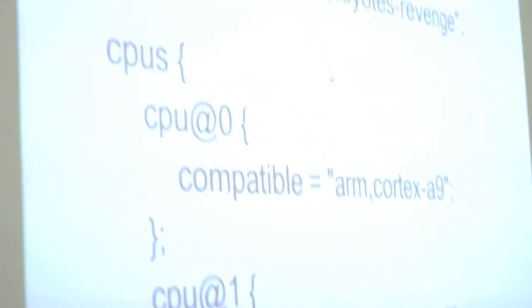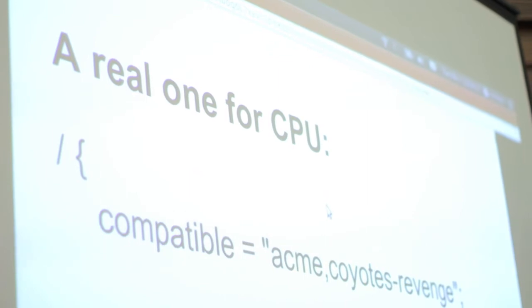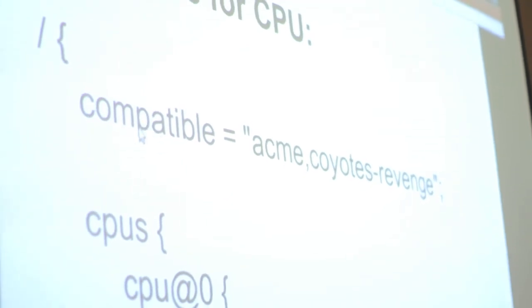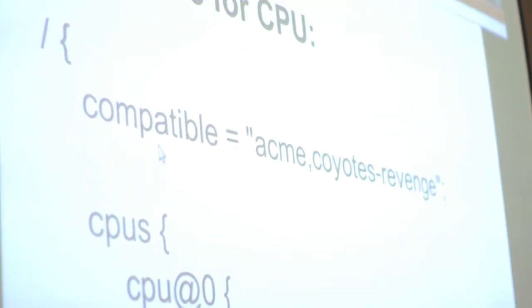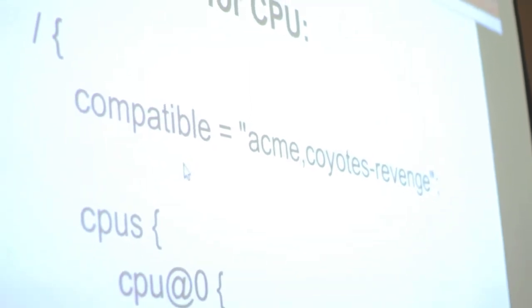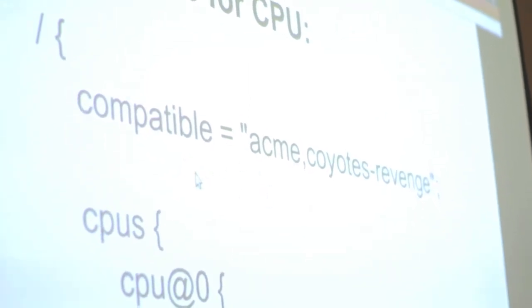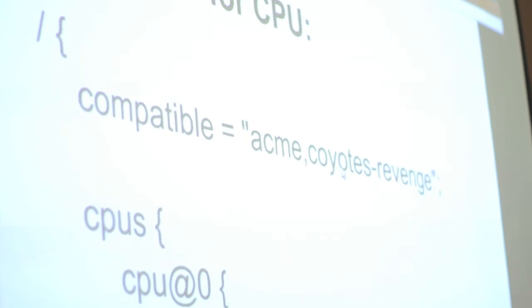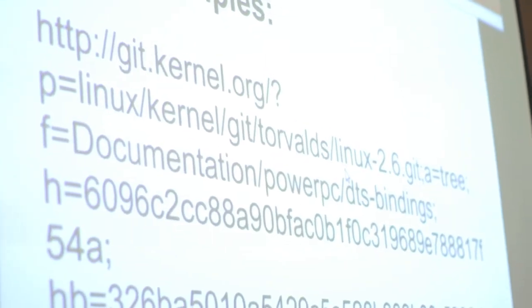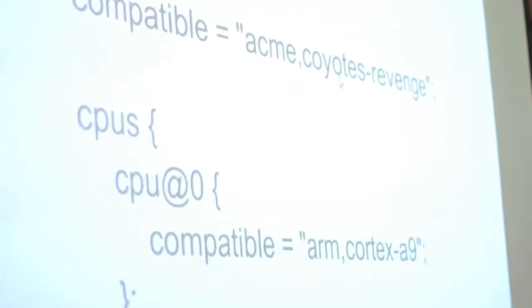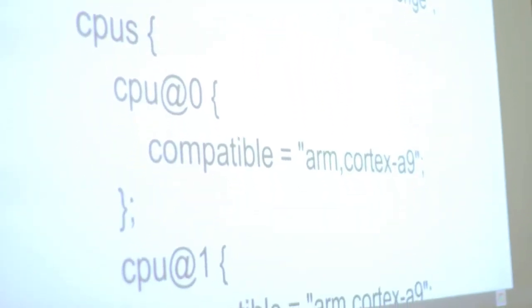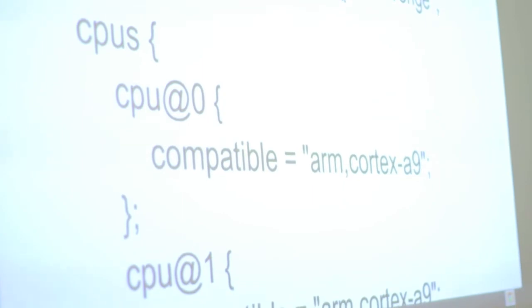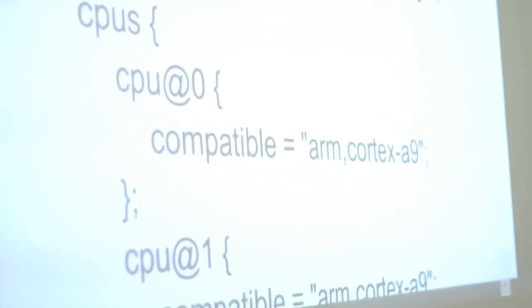Here is a real device tree configuration file for a CPU. Think about a multi-core setup where you have two physical CPUs. After the root node, you point out compatibility. Generally, for every keyword here, there is detailed documentation on how to use it, explanations, and restrictions for what you can write inside.